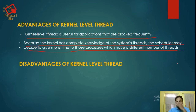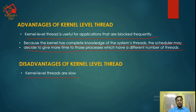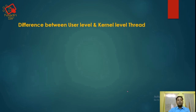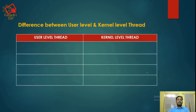What are the disadvantages of kernel-level threads? Number one: kernel-level threads are slow, as they are more complicated than user-level threads. Number two: kernel-level threads are not efficient. Number three: kernel-level threads have overhead because they need a thread control block.